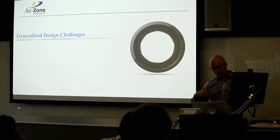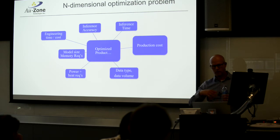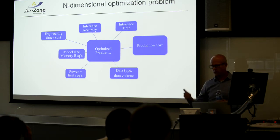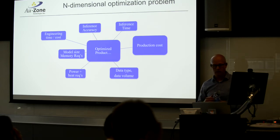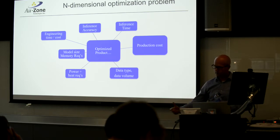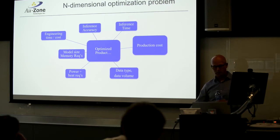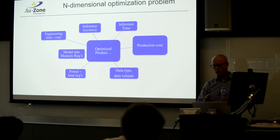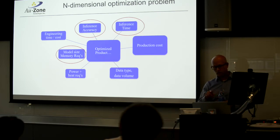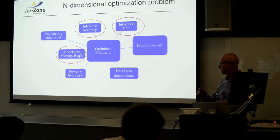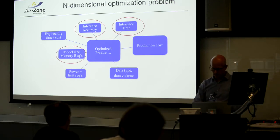Going back to the root of the problem we most often hear from customers: how do they solve this n-dimensional optimization problem where they're trying to solve for manufacturing cost, development time and cost, inference time appropriate for their domain, and model and memory requirements such that it'll run on a processor that meets their cost mark. All of these things combined make it like whack-a-mole — it's hard to solve for all of them at once, and that's where the tool really shines. What I'm going to talk about today are model size requirements, inference accuracy, and inference time.